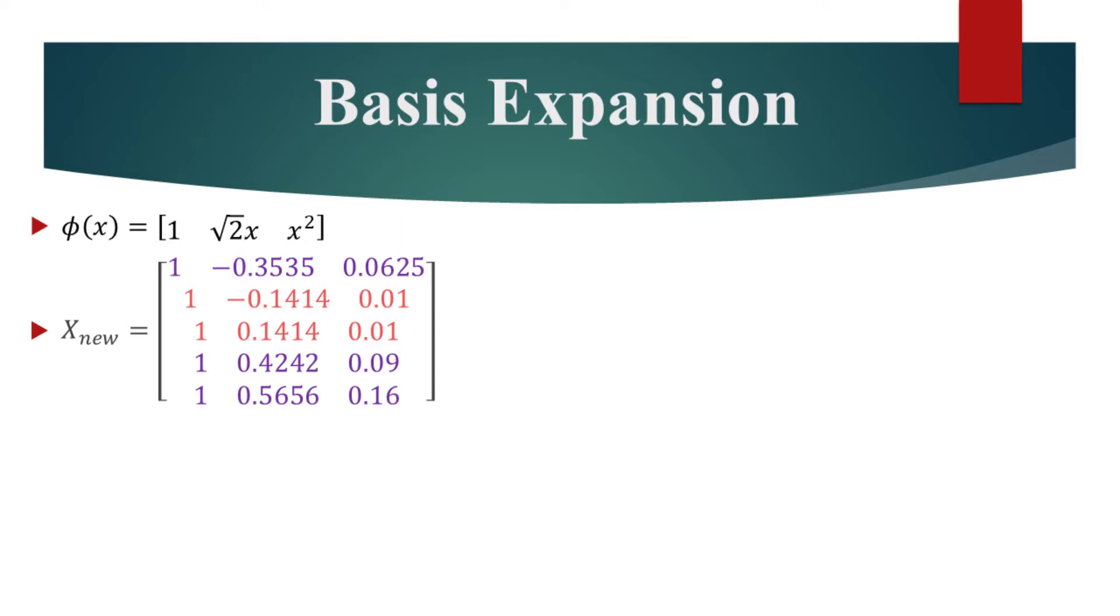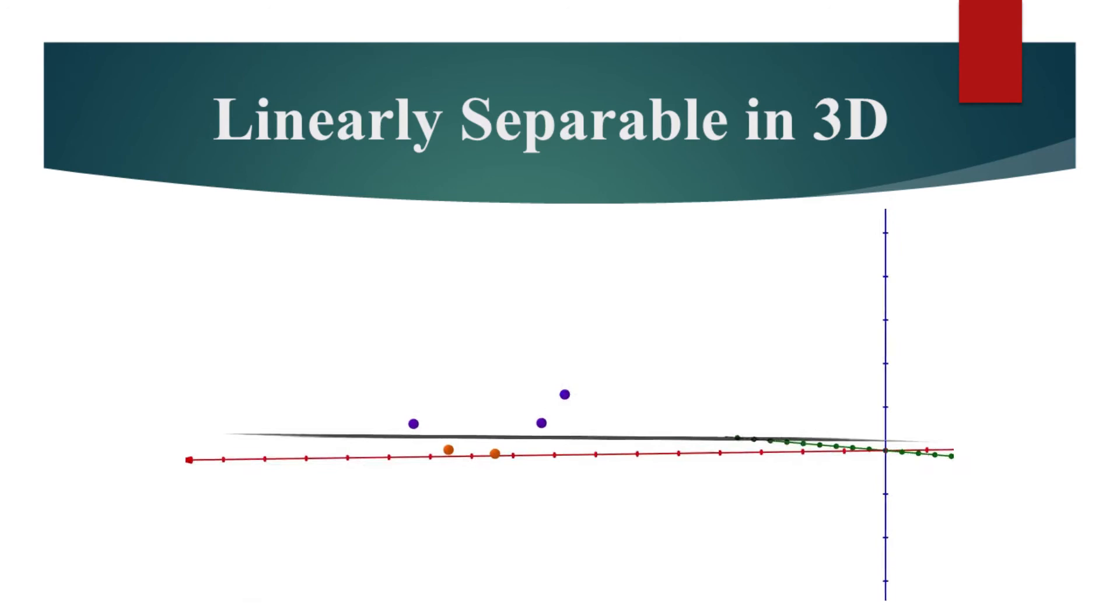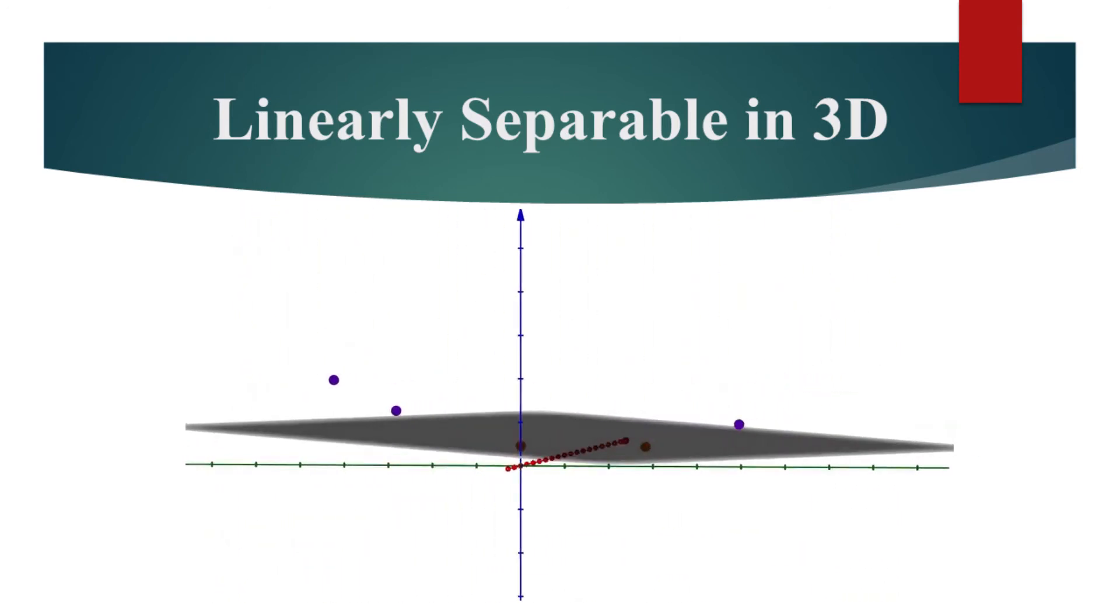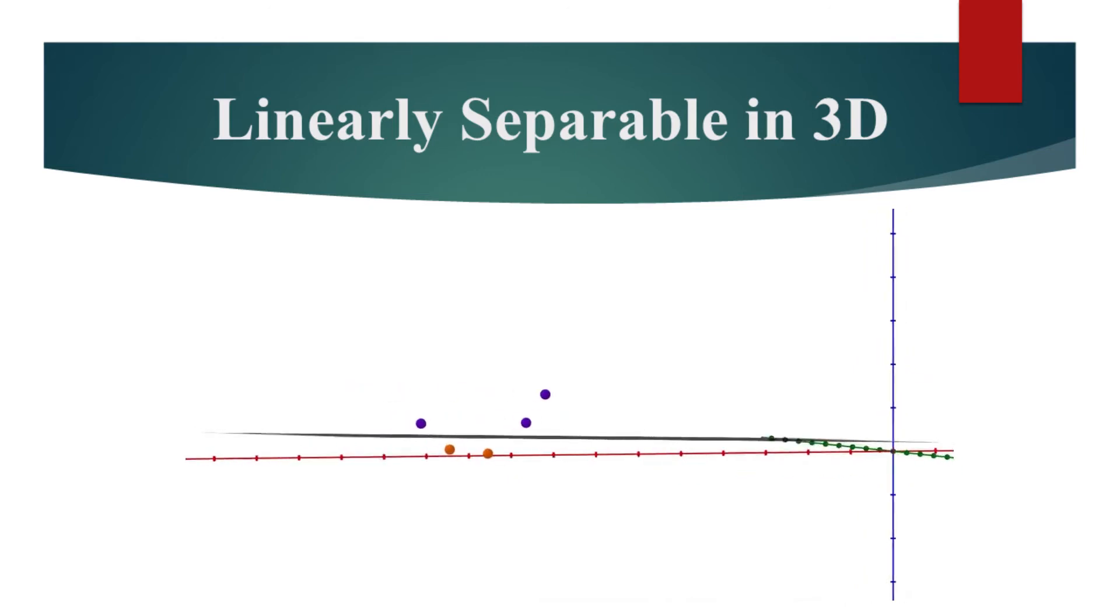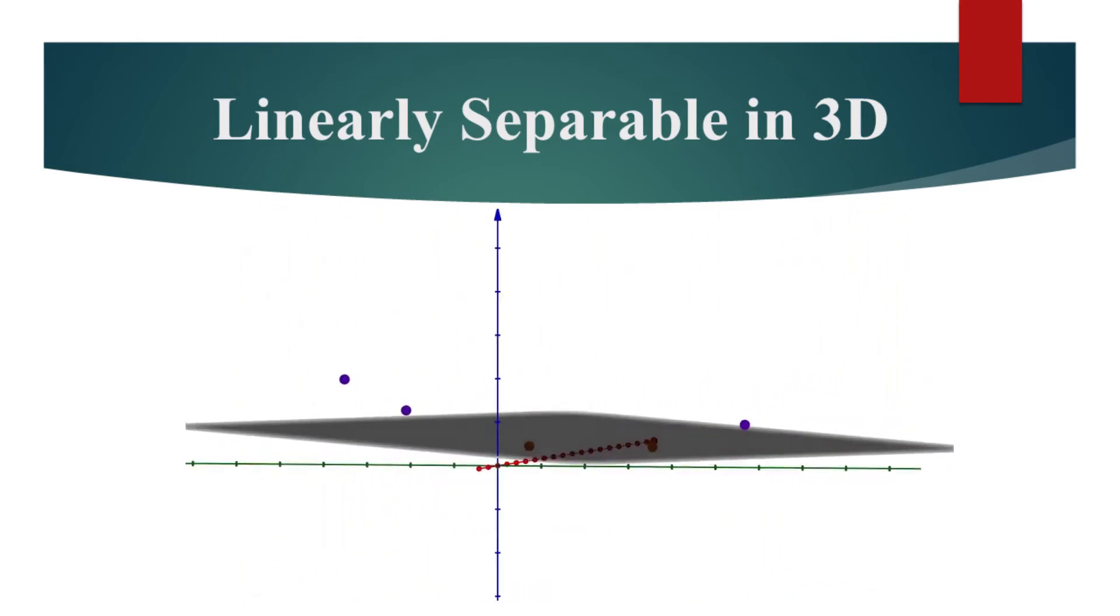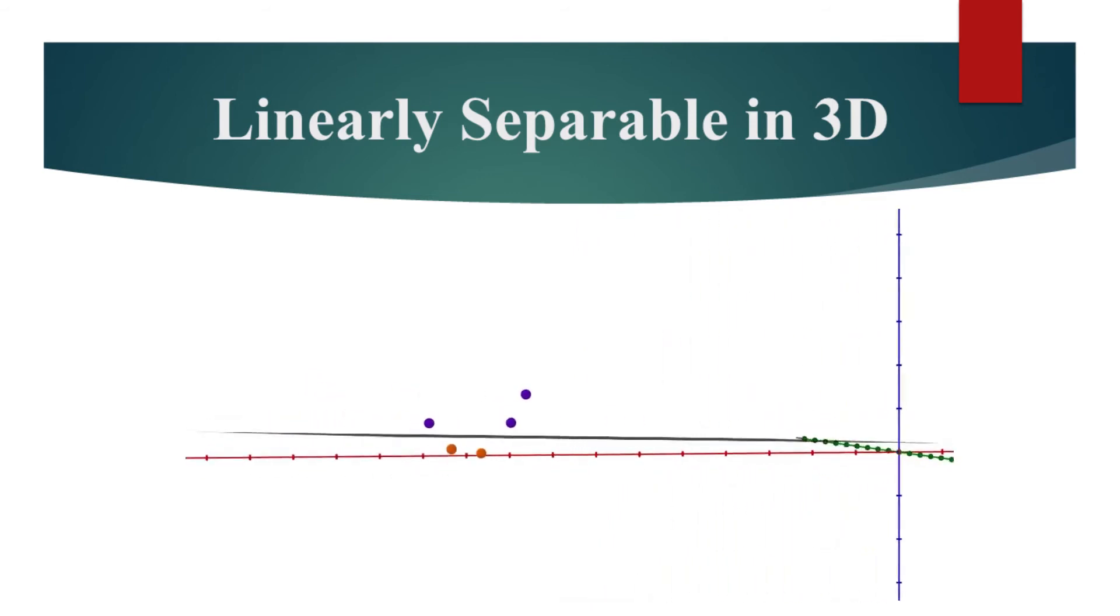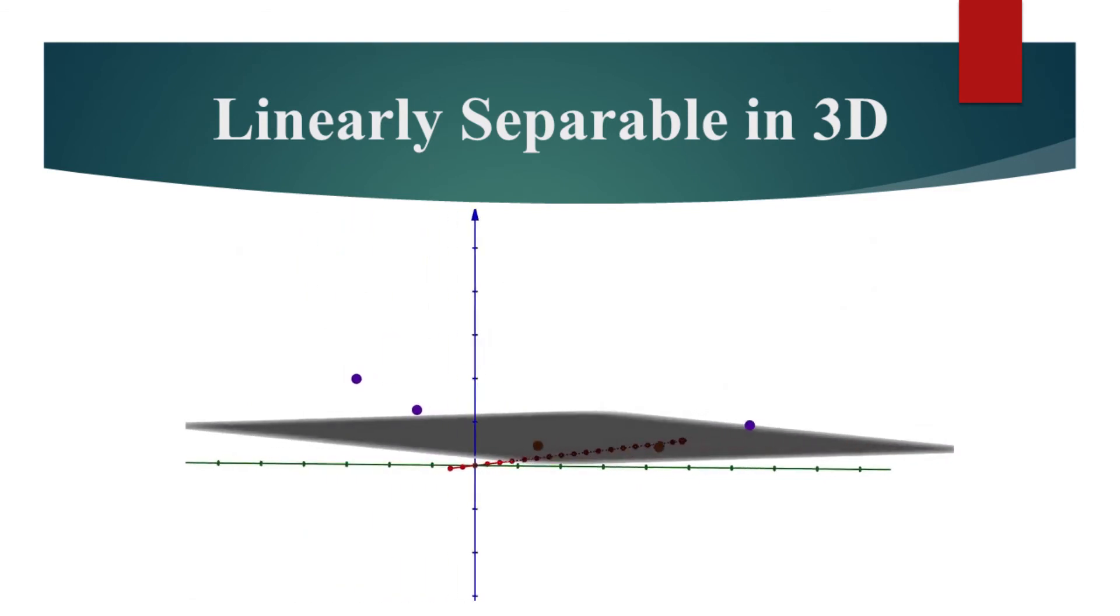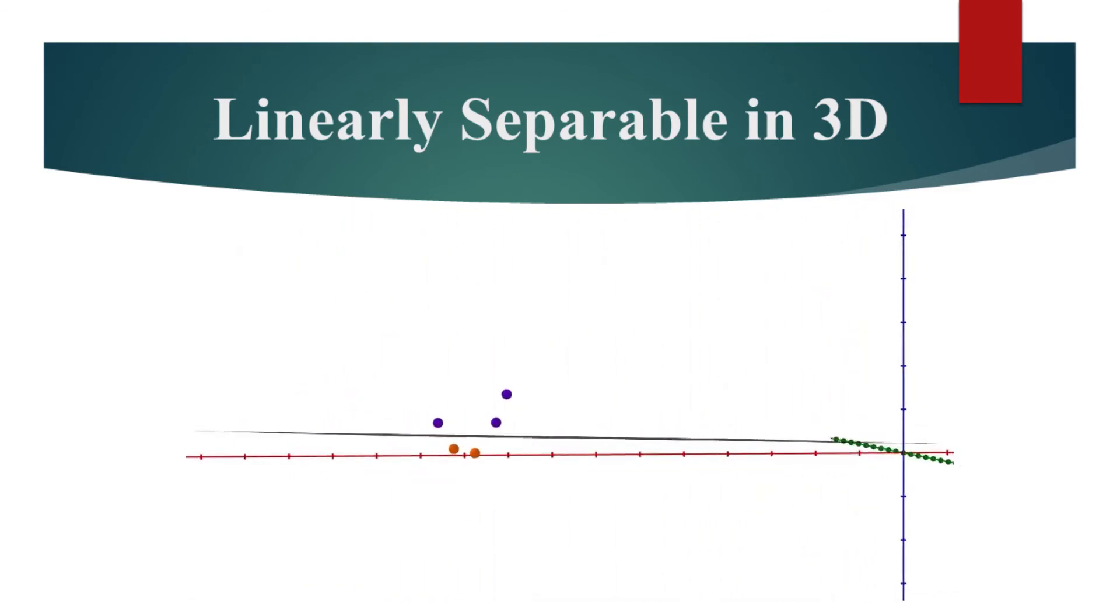Let's graph this data in this three-dimensional space. In this animation, we have the data points in this three-dimensional space, and we also have the separating hyperplanes. The data that was not linearly separable in the one-dimensional space has now become linearly separable in the three-dimensional space.